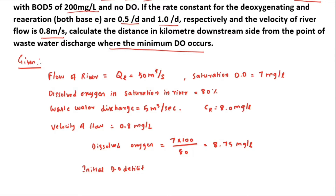So the initial DO deficit D₀ = 8.75 minus 7 = 1.75 milligram per liter.